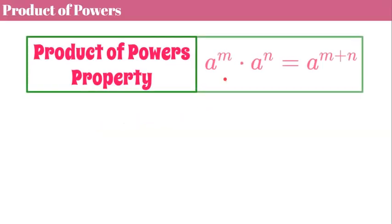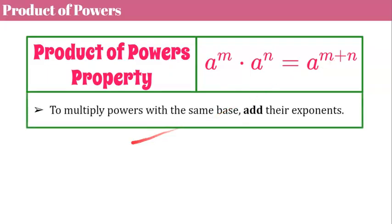First property we're going to learn about is the product of powers property, which states any base a to the m multiplied by the same base to the n, you can add the exponents. So to multiply powers with the same base, you can add their exponents.